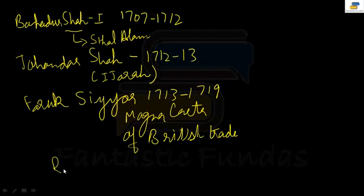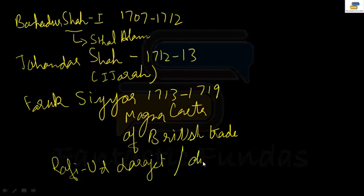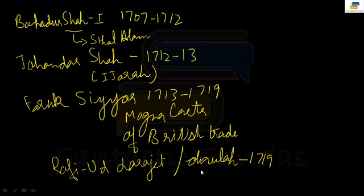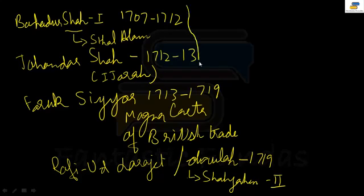After Farrukhsiyar came two people: Rafi-ud-Darajat and Rafi-ud-Dawla — both just in 1719. The Sayyid brothers had a big role in their coming. Nothing much happened. Just to remember: Rafi-ud-Dawla was also known as Shah Jahan Part 2.